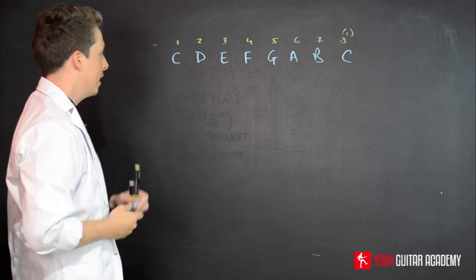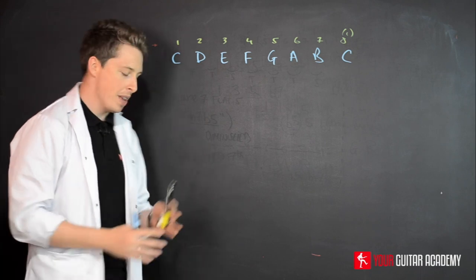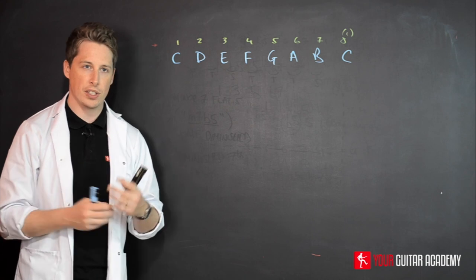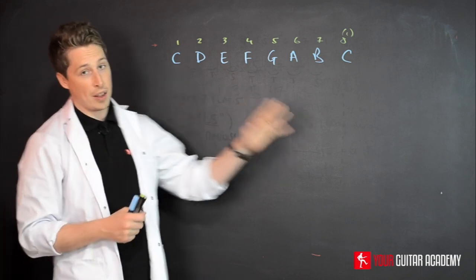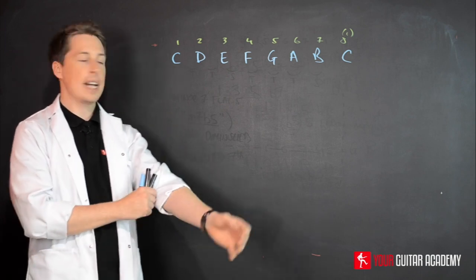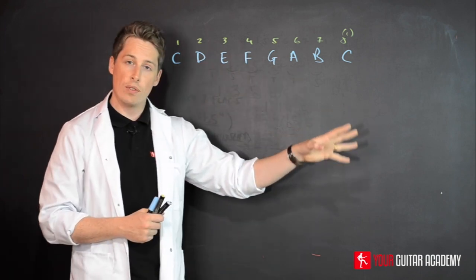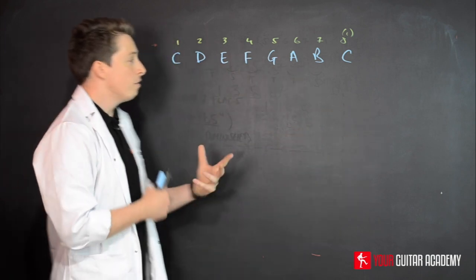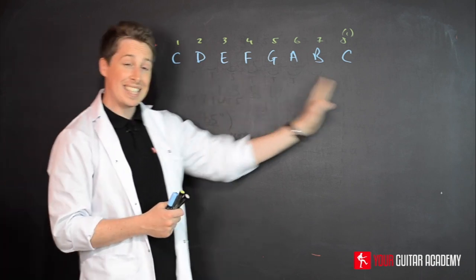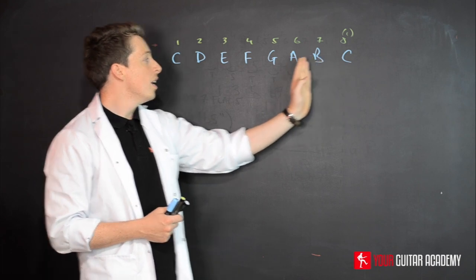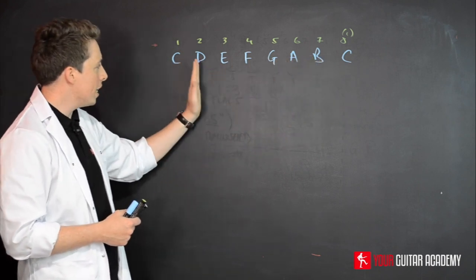gives us our C major scale. Now, if you remember, the purpose of harmonizing is to create a set of chords that will all work together and will allow someone to play a certain scale over the top. For example, with C major, if we use only these seven notes to create chords on each degree,